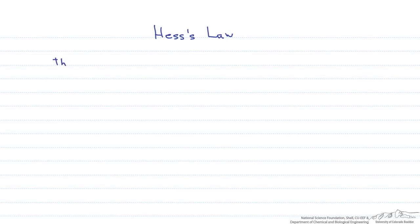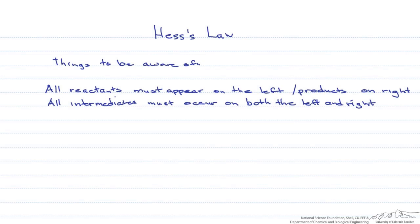The things that you need to be aware of when you're doing a Hess's law calculation: First, all reactants must appear on the left hand side, and all products have to appear on the right. Also, all intermediates must occur on both the left and right side of the reaction so they can cancel each other out, since they aren't part of our reaction of interest.